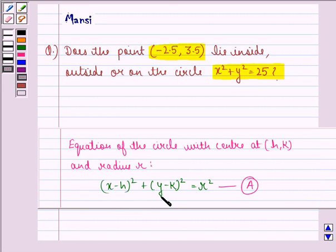Before starting the solution, let us see this. The equation of the circle with center at (h,k) and radius r is given by (x-h)² + (y-k)² = r².